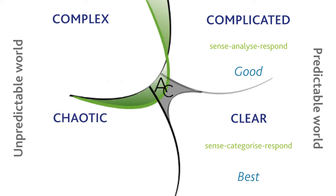At the bottom of the framework between clear and chaos, you'll notice this squiggle. This boundary between clear and chaos represents a cliff edge. When things that were ticking along quite nicely in clear fall over, they can crash over the cliff and into chaos. This can happen if I over-constrain a system that can't naturally be constrained, or if I become complacent and reduce the level of monitoring and auditing. It takes very little energy to fall off a cliff, but it takes a lot of energy to climb back up it.